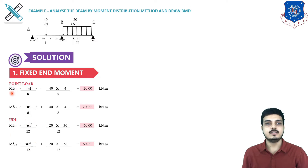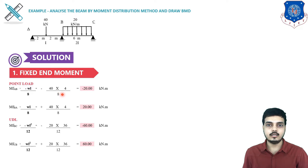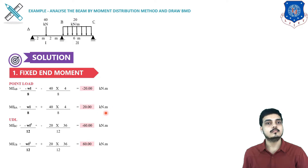MFAB means the fixed end moment of the AB span from A to B. At A it is minus WL/8 because it is anticlockwise. So W = 40 kN, L = 4 m, divided by 8 gives minus 20 kN·m. Similarly, MFBA is clockwise so it is positive: 40 × 4 / 8 = plus 20 kN·m.